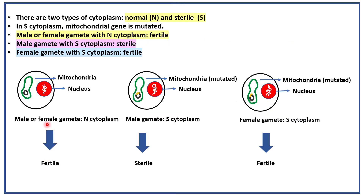There are two types of cytoplasm: normal (N) and sterile (S). In S cytoplasm, the mitochondrial gene is mutated. A male or female gamete carrying N cytoplasm is fertile. A male gamete with S cytoplasm is sterile, but a female gamete with S cytoplasm is fertile. Hence, it is called cytoplasmic male sterility.